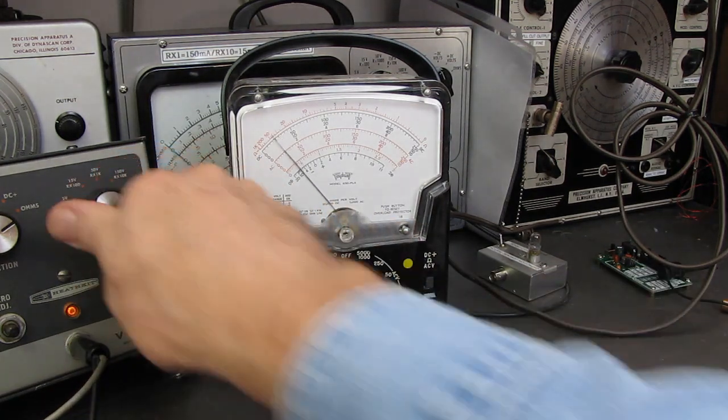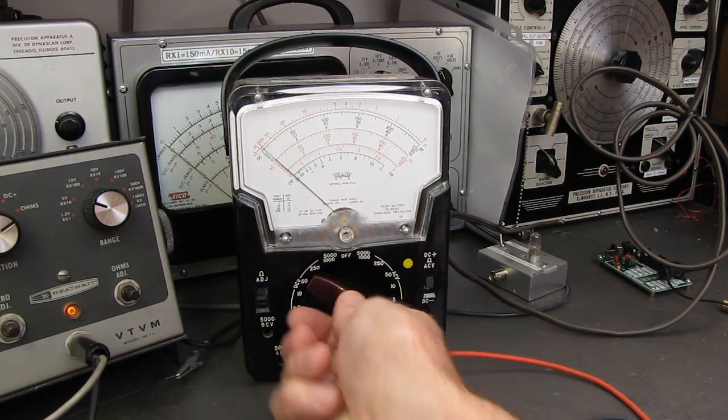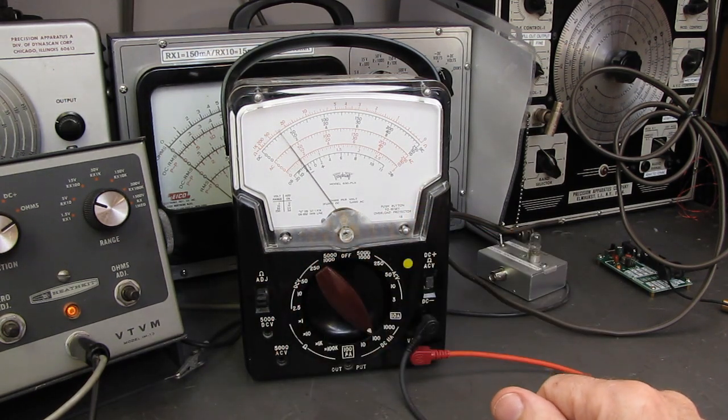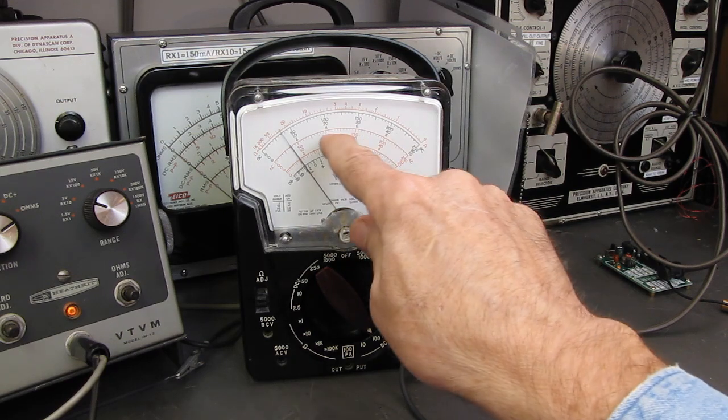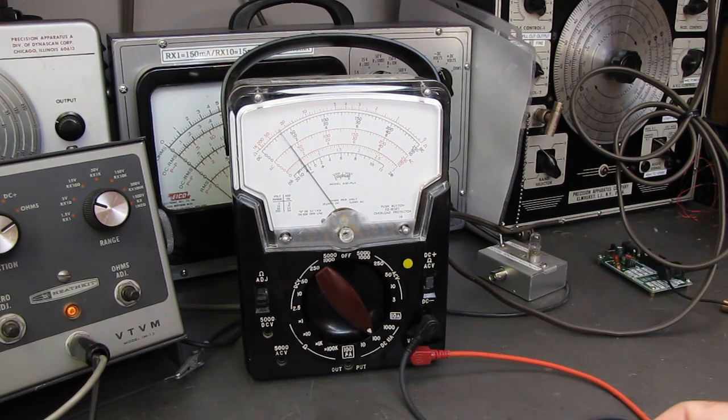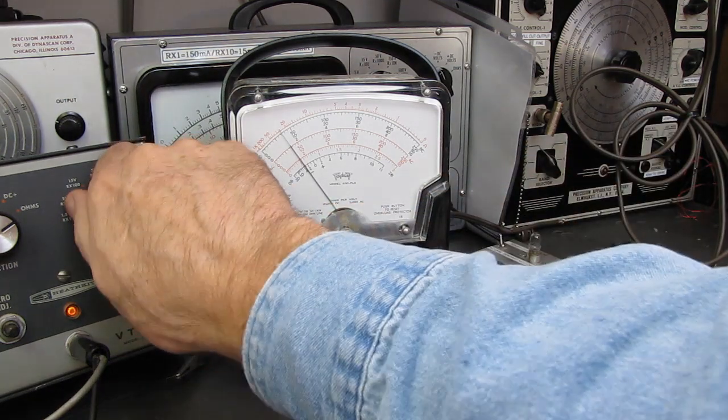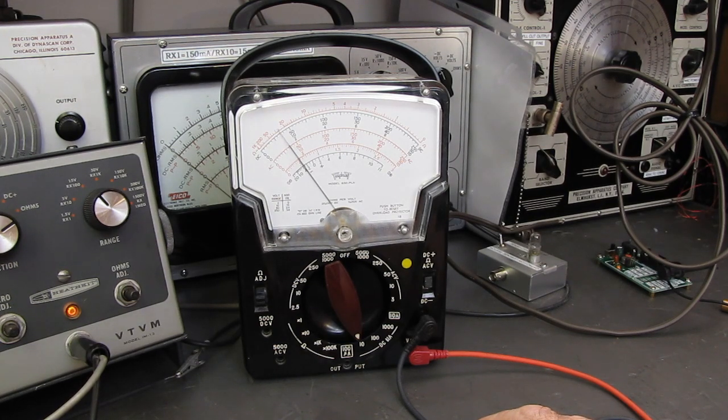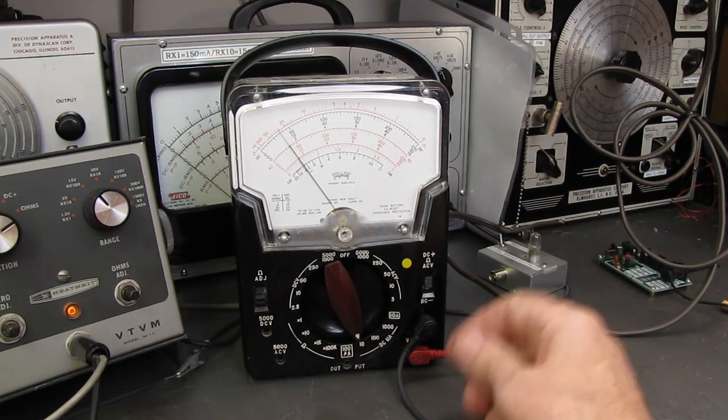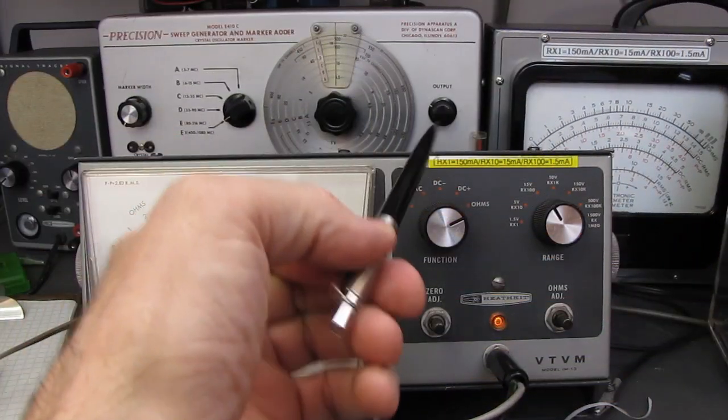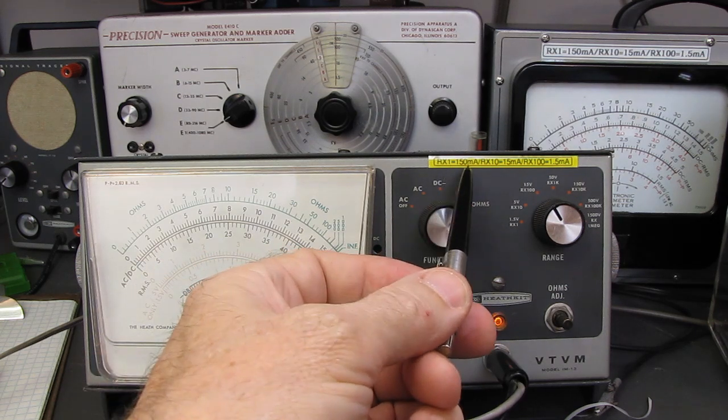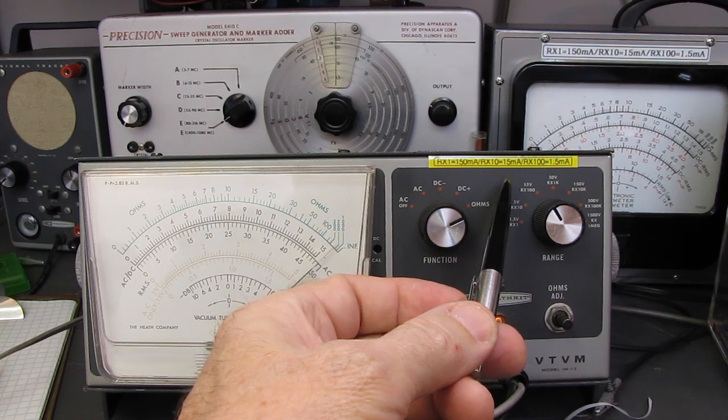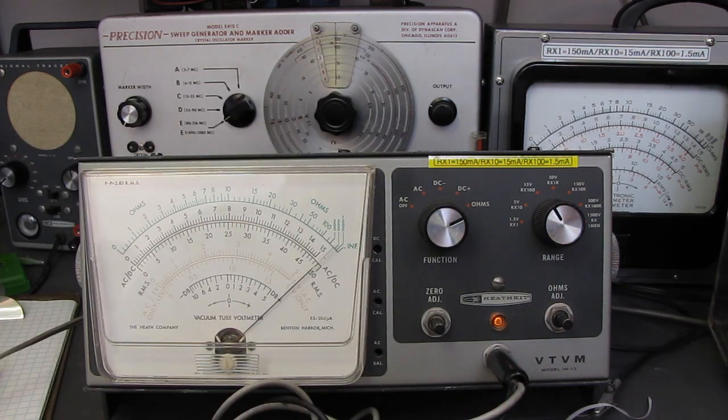And then we'll go to R times 10. And it should drop down to about 15 milliamp years. So we're on 100 milliamp years scale. 15 milliamp years. Should be in stages of 10 all the way down. You should have decade steps all the way down. And we're on the 10 milliamp years scale. So that's one and a half milliamp years, 1.5. Just like the other VTVM. They're in decade steps. So I'm going to make a label and put it right on here. And from now on, at a glance, I'll know. R times 1 is 150 milliamp years. R times 10 is 15. R times 100 is 1.5.